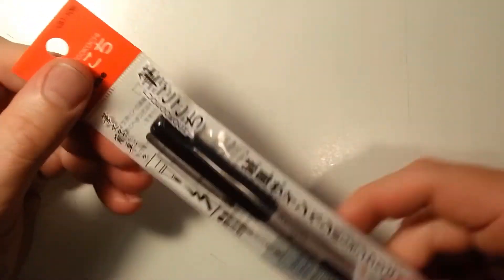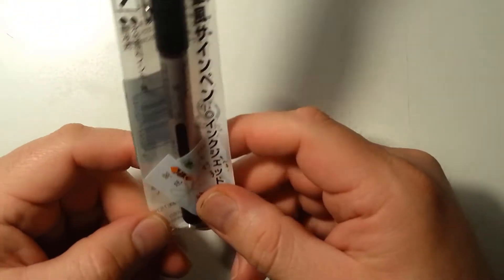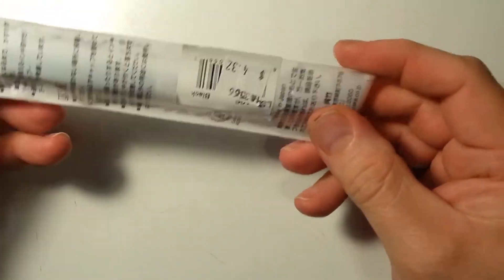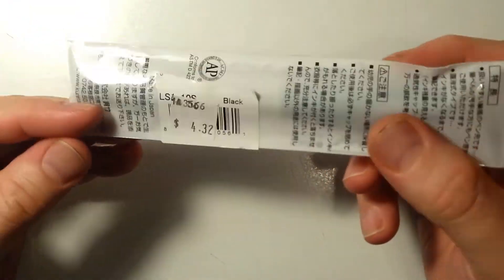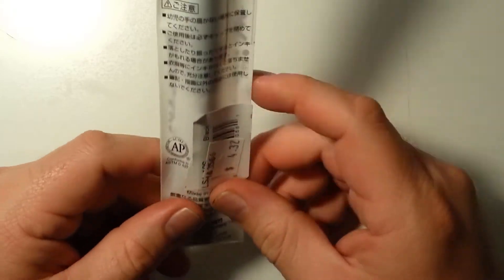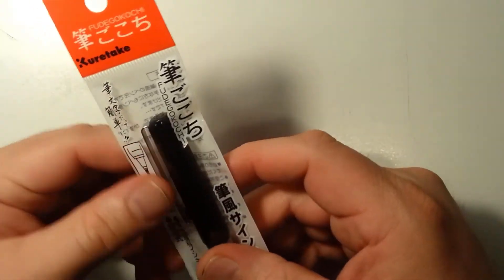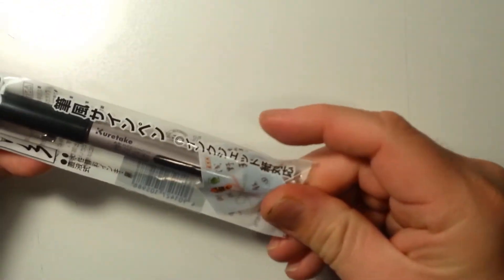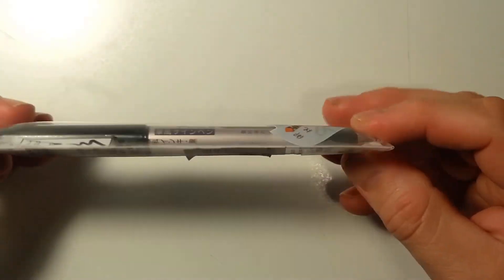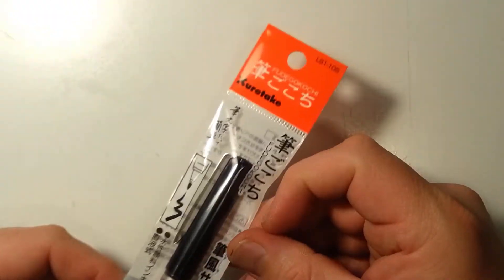The second thing I picked up is this Japanese art pen I found. This is more of a give it a try and see how it works. As you can see, the entire label is all in Japanese. I don't really know what it is but we'll check it out. Looks like it's a brush pen so we'll see what it's like.